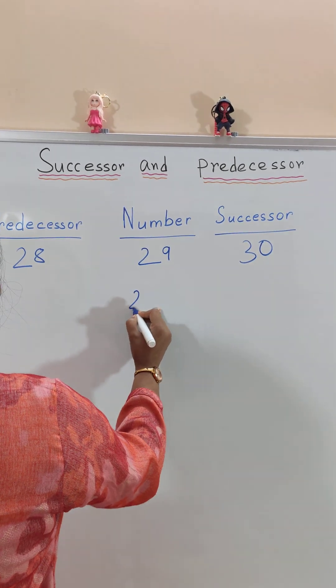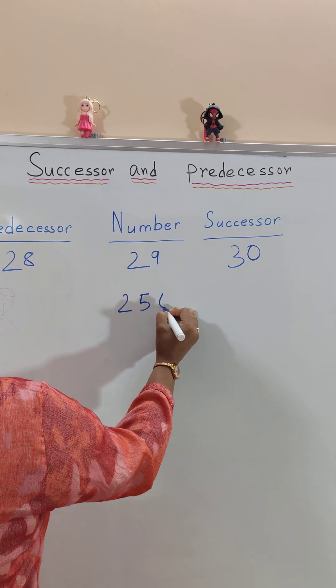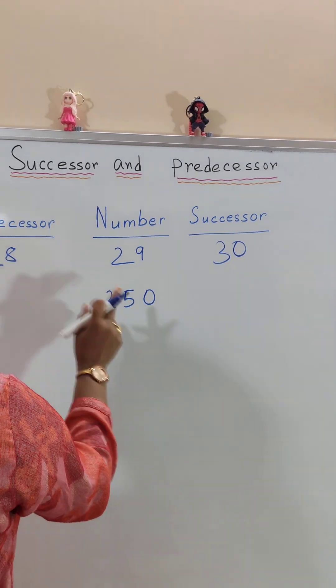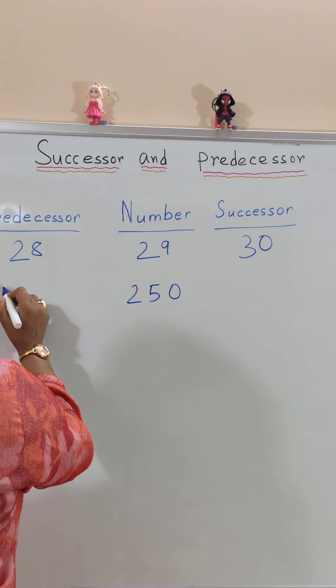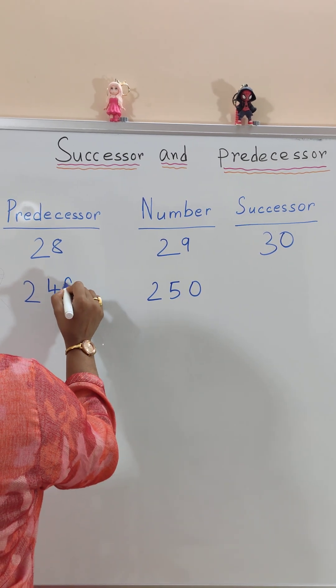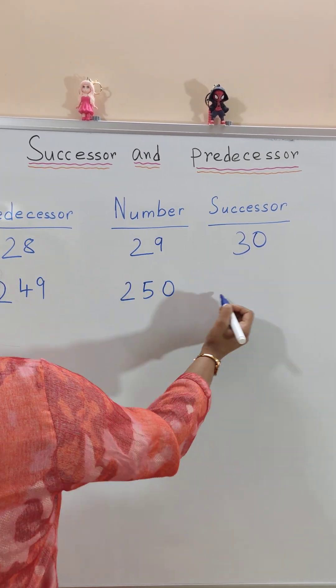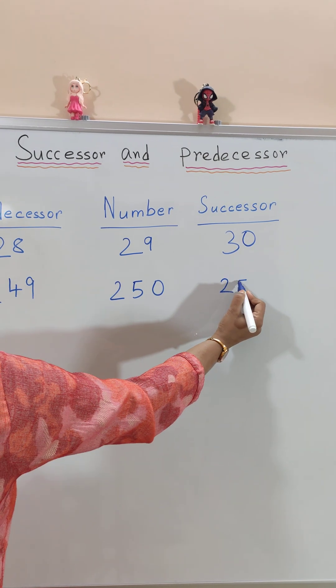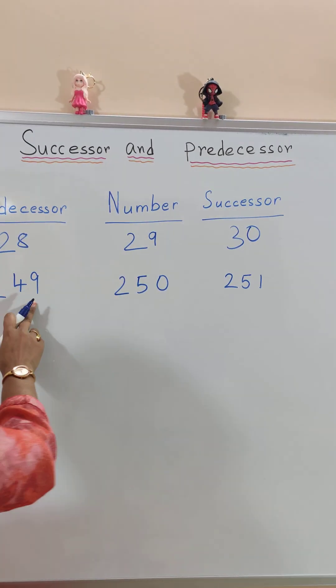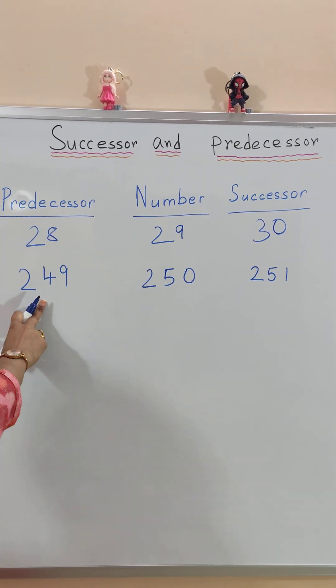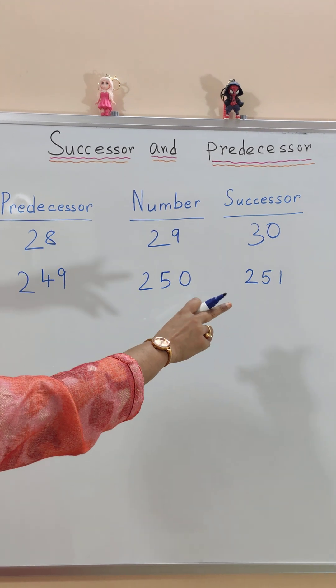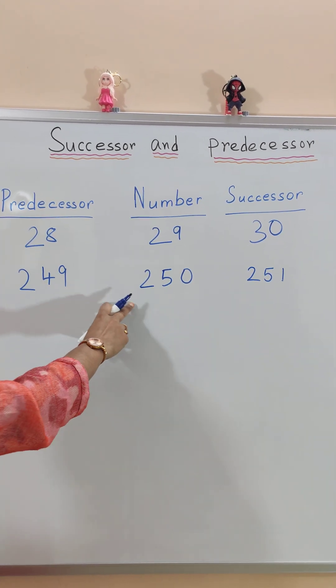Let me give you another example. Suppose the number given is 250. So the predecessor of 250 is just the before number, that is 249. And the successor of 250 is 251. So 249 is the predecessor and 251 is the successor of the given number 250.